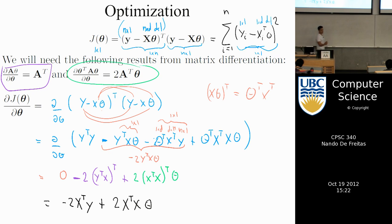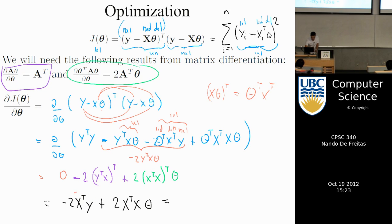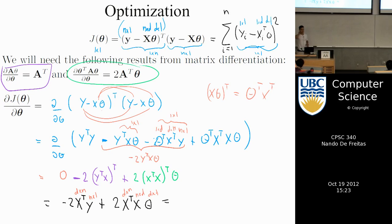That's the derivative. Note it's a vector, not a scalar. Looking at dimensions: X^T is D by N and Y is N by 1, so the first term is D by 1. The second term: D by N times N by D times D by 1 also gives D by 1. So we have a vector that's D by 1. We call this vector the gradient — the gradient of J(theta). The gradient is just a vector of derivatives taken with respect to all parameters.